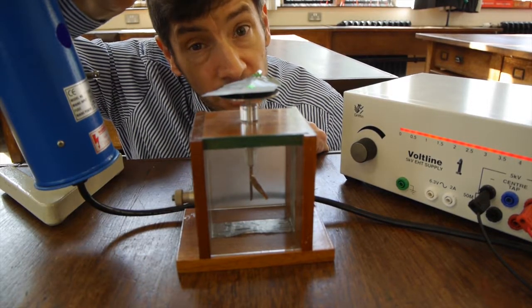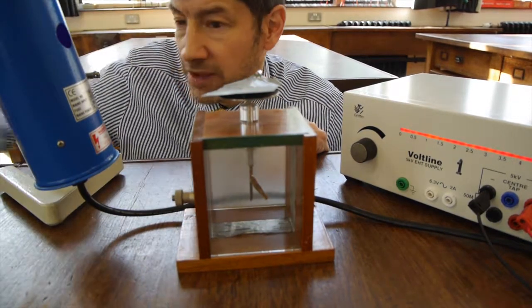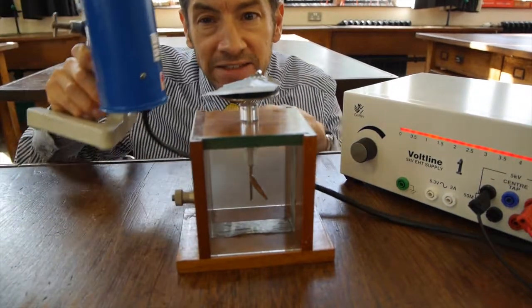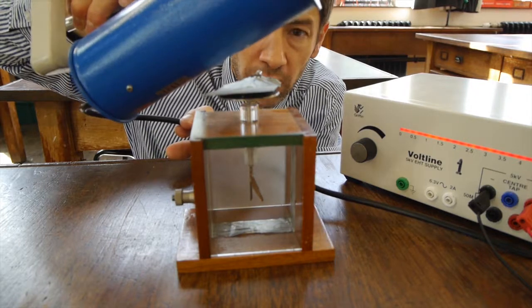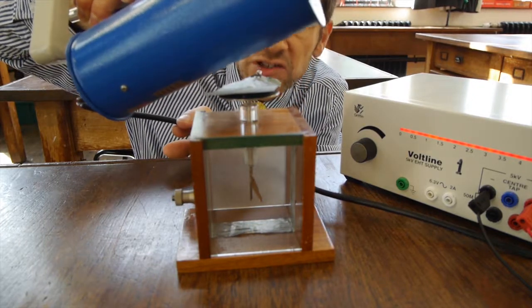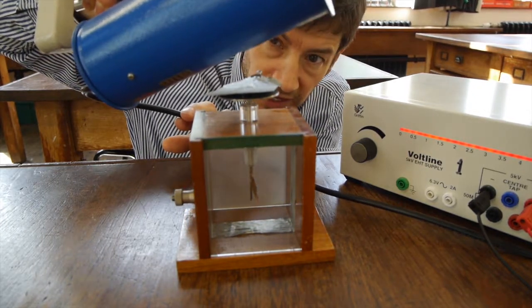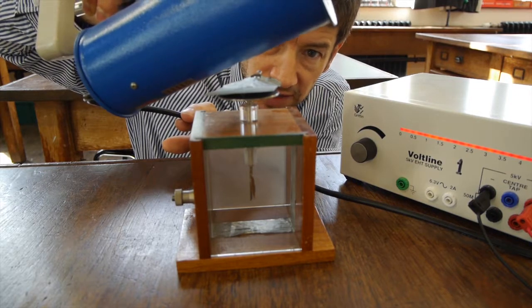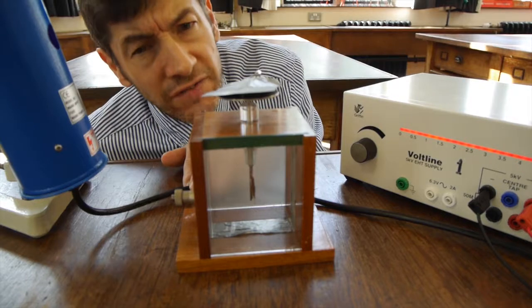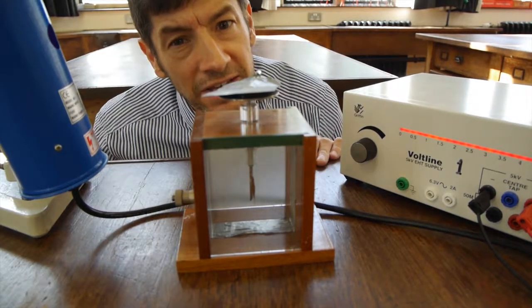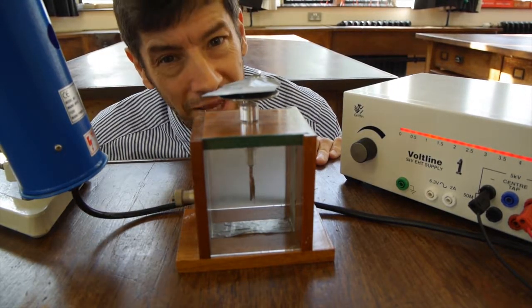The electrons just remain on it. But if we take our fairly dim and low-intensity ultraviolet source and hold it over the zinc for a while, you'll notice that slowly but surely the electroscope discharges and the electrons disappear from the surface of the metal. And this is the photoelectric effect, and it's going to take some explaining.